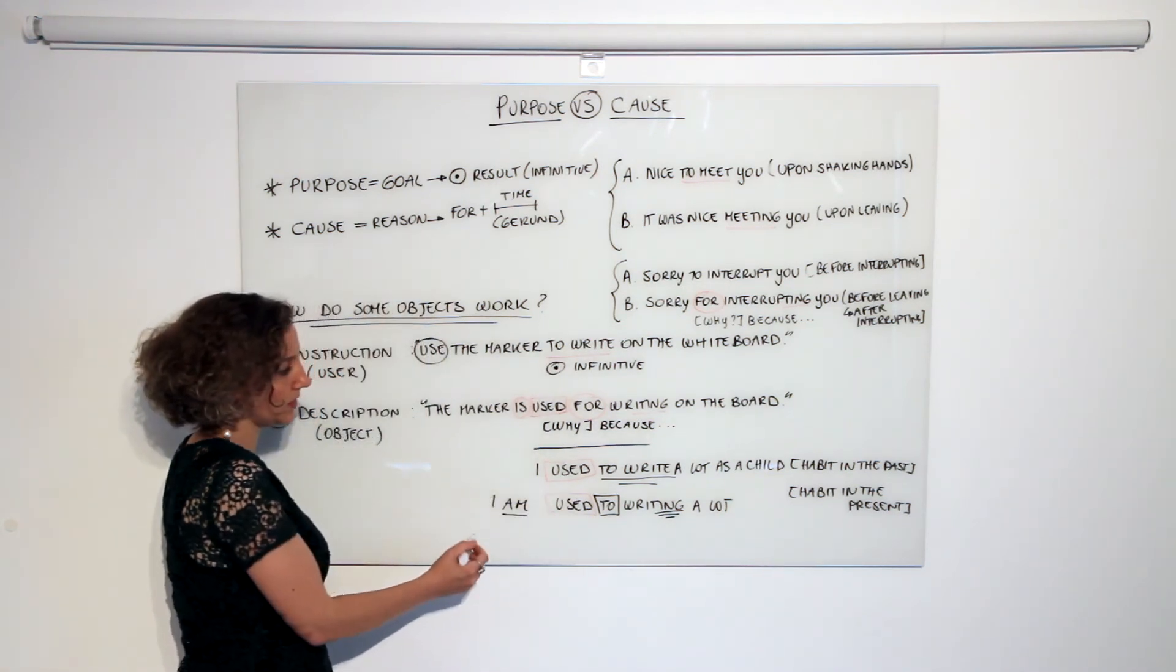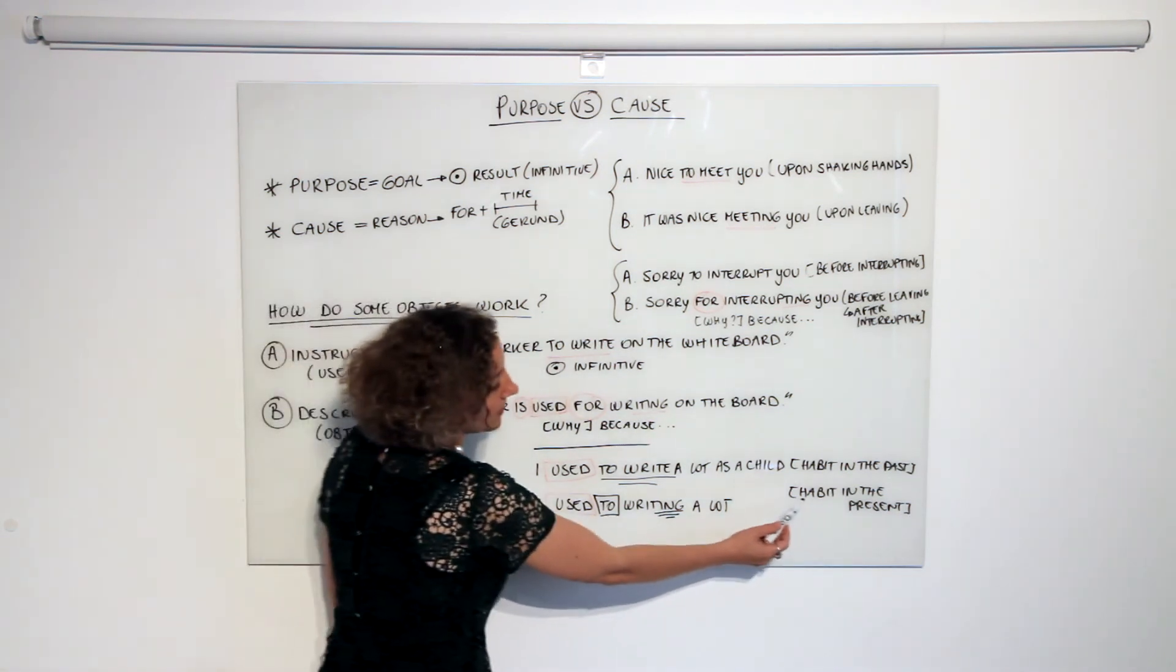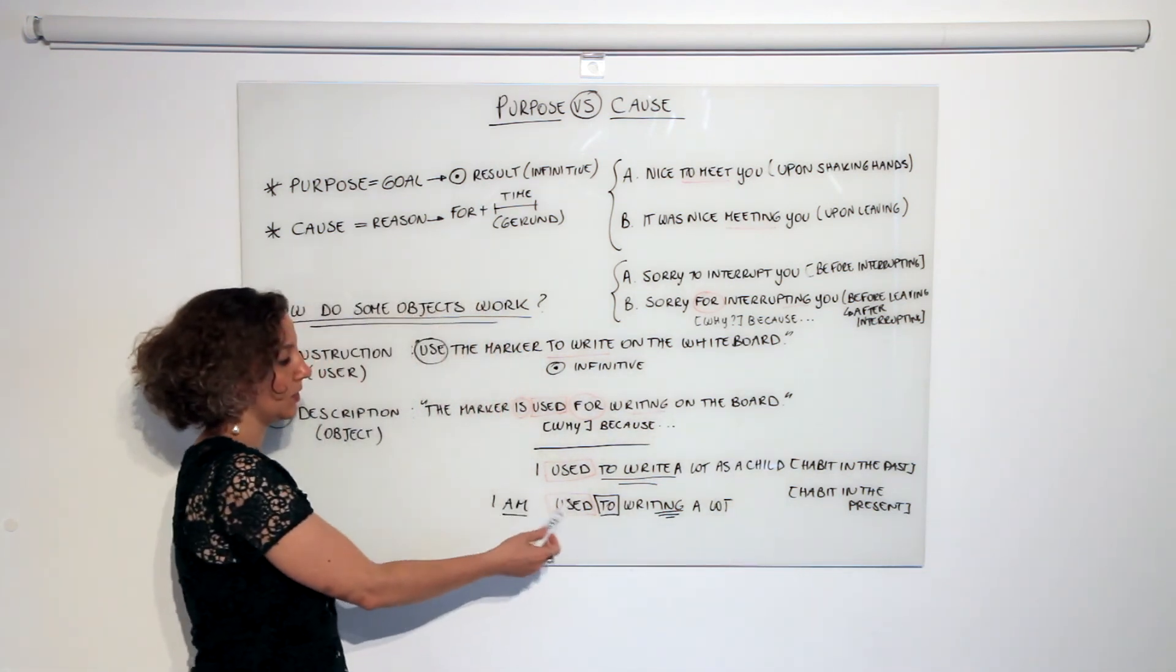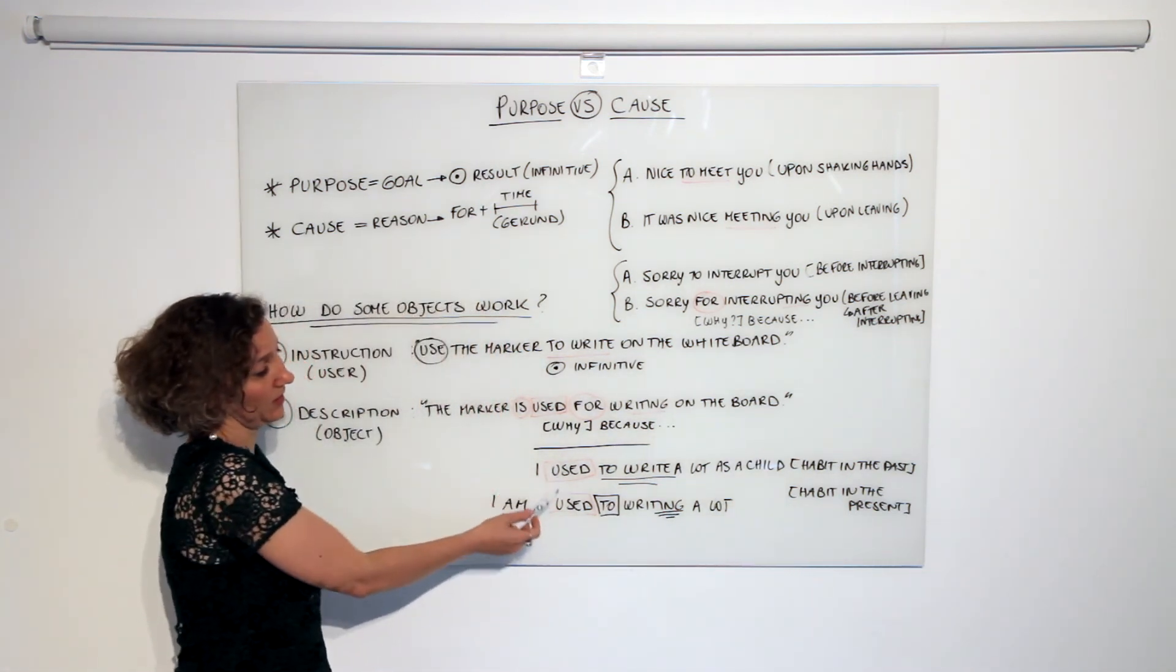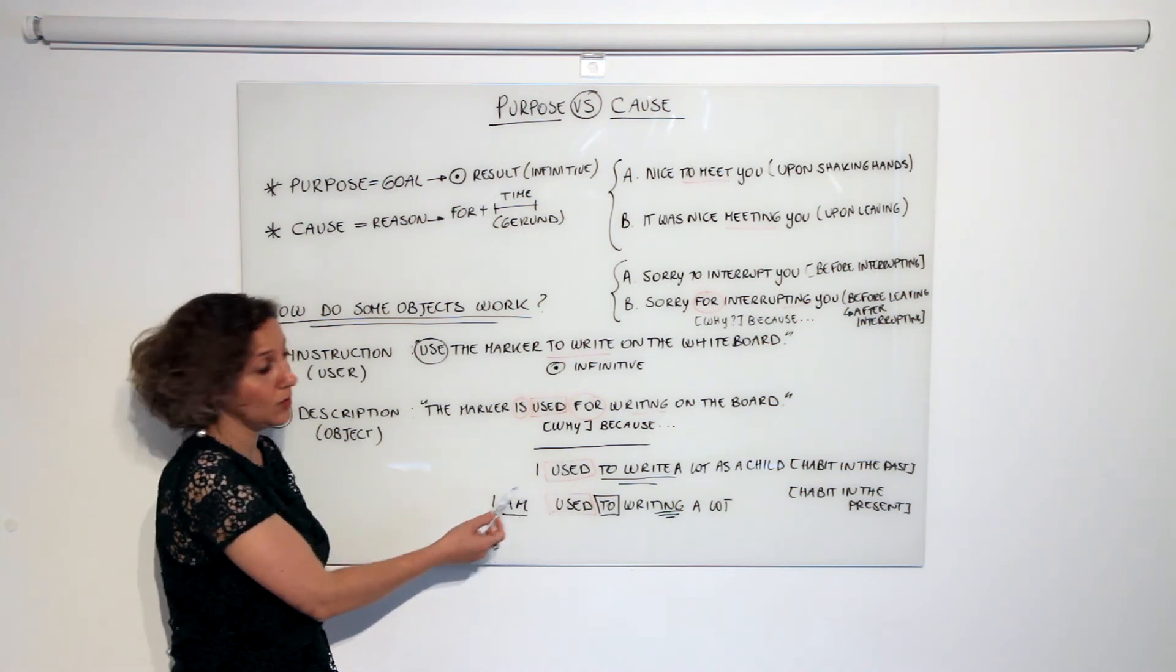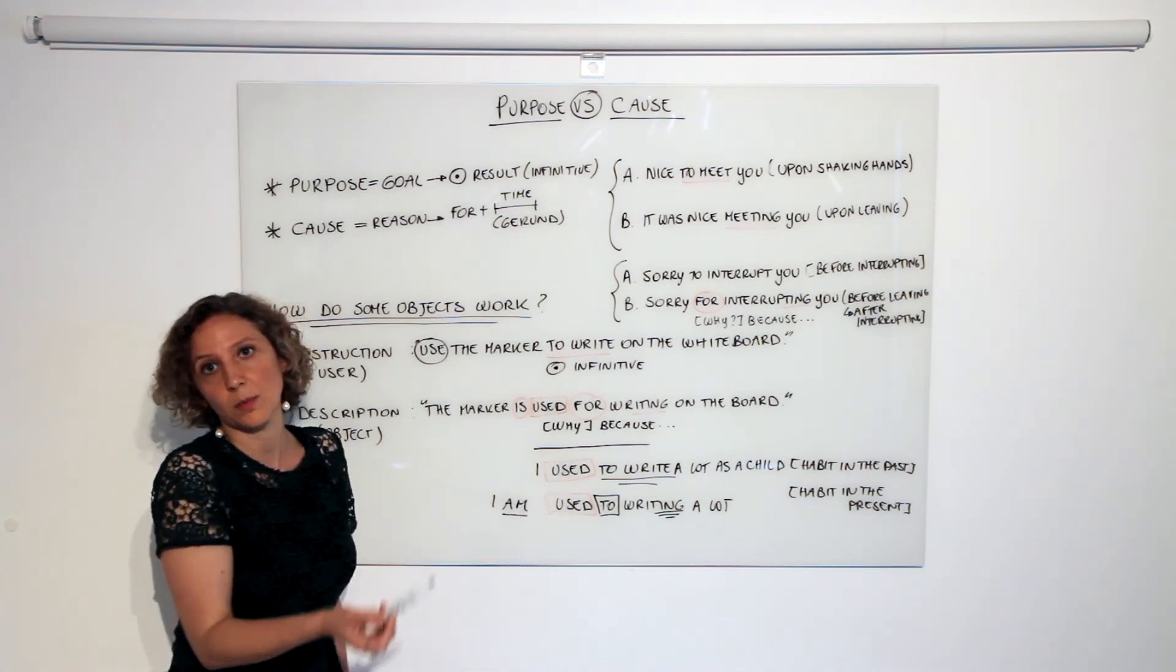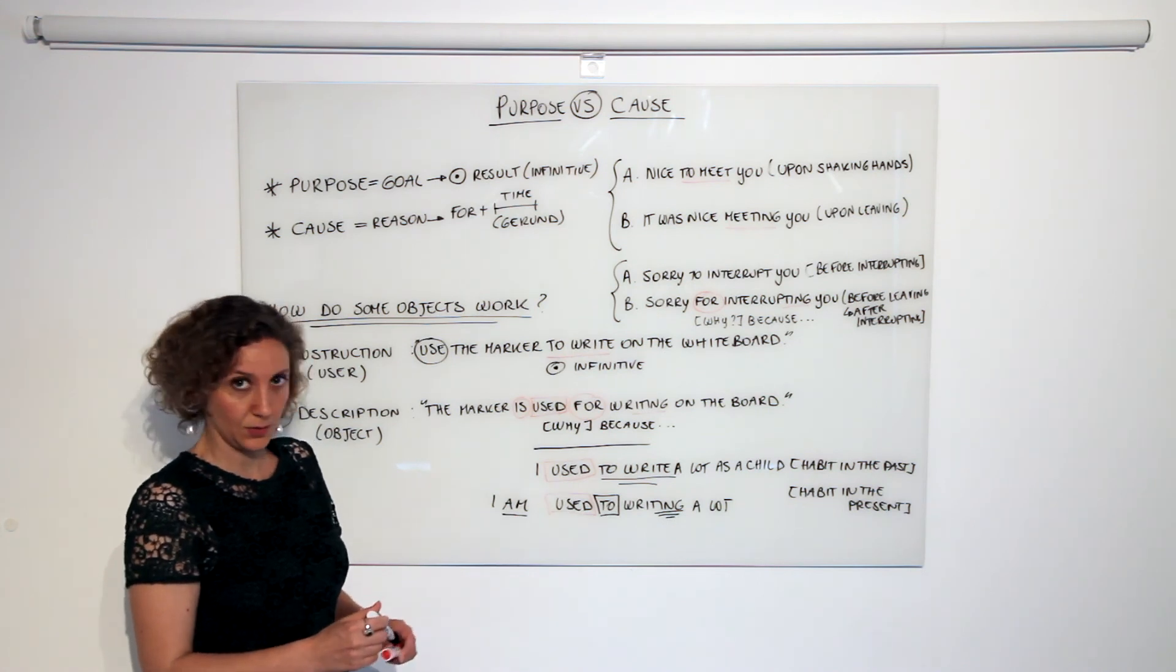I can also use this structure for habits in any possible tense: 'I was used to writing' (even though in that case this would be easier to use), 'I have been used to writing,' 'I will be used to writing,' and so on and so forth.